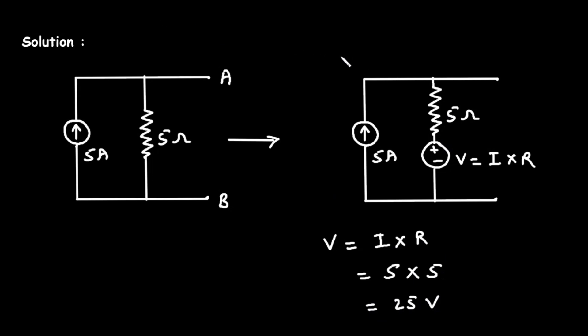Now what we have to do, we have to remove this current source. So let's remove this current source from here. So our final circuit will look like this. Here, this is a resistor in series with a voltage source, where the value of this voltage source is 25 volt.